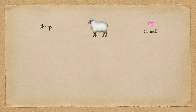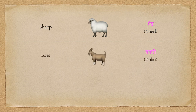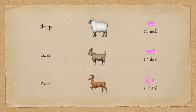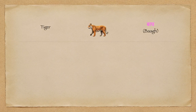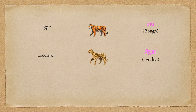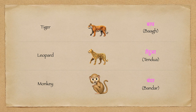Sheep is Bhed. Goat in Hindi is Bakri. Deer is called Hiran. Tiger is Baagh. Leopard is Tendwa. And monkey is Bandar.